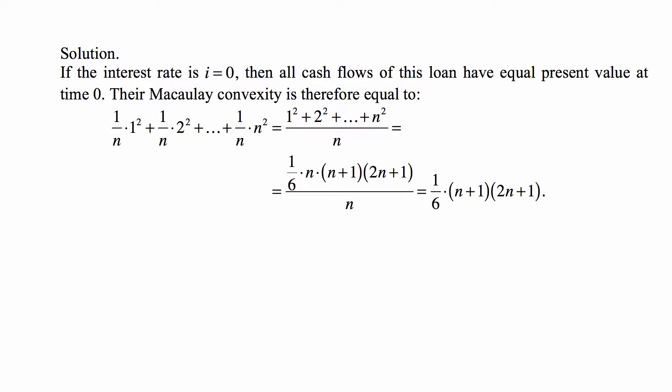So the Macaulay convexity is therefore equal to the weighted value average of the squares of times of payments. So one over n times one squared plus one over n times two squared and so on up to one over n times n squared. Or that's the same as one squared plus two squared plus and so on up to n squared over n. The sum of squares of n consecutive integers from one to n is equal to one sixth of n times n plus one times two n plus one.